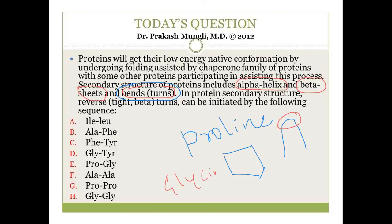Glycine is the simplest amino acid among all 20 standard amino acids, and hence glycine can be well accommodated along with proline. That is why in beta bends, loops, and turns, along with proline there will be glycine. Therefore, option E — proline and glycine — is the answer to this question. Thanks for watching, and I will come up with some other questions soon. Thank you.